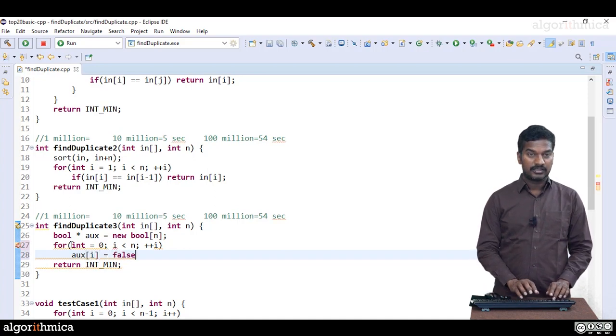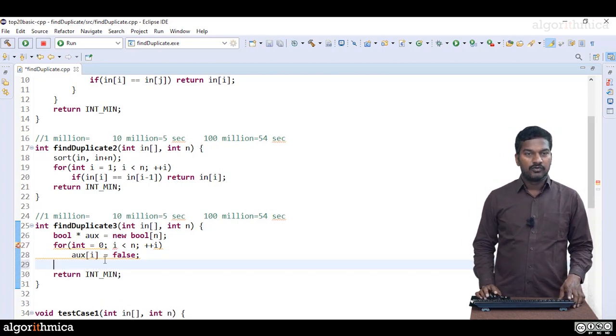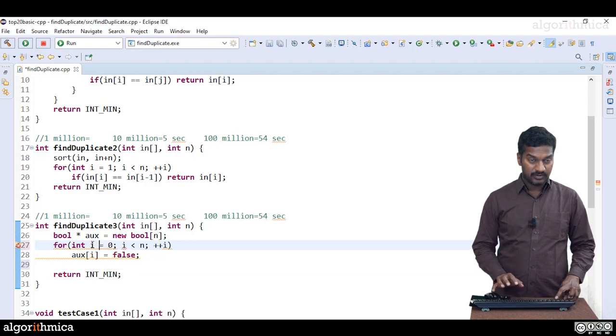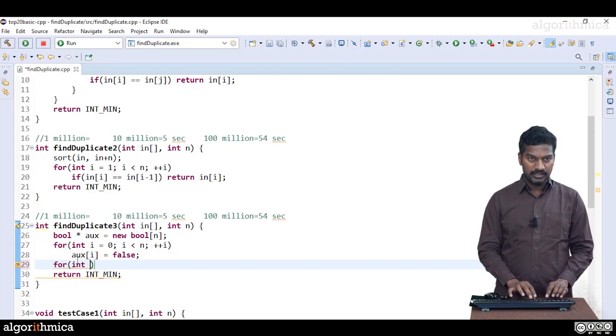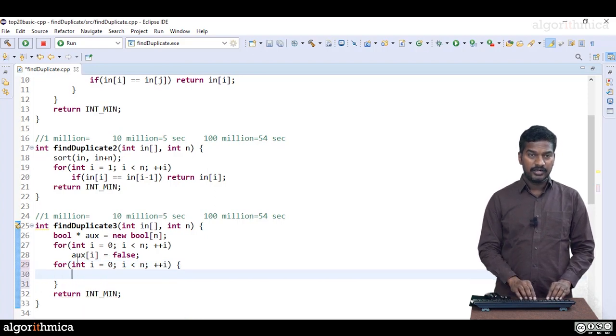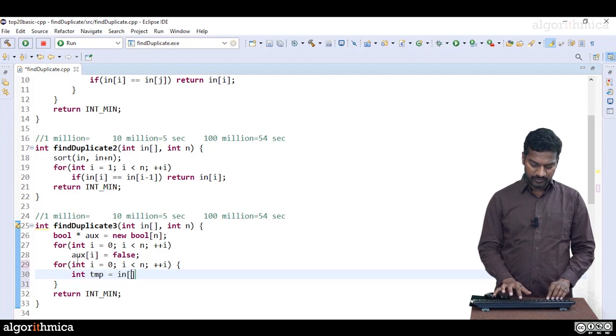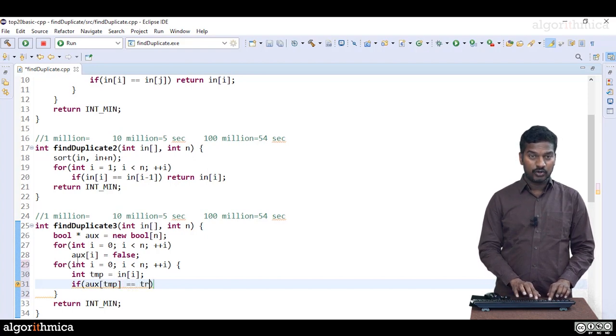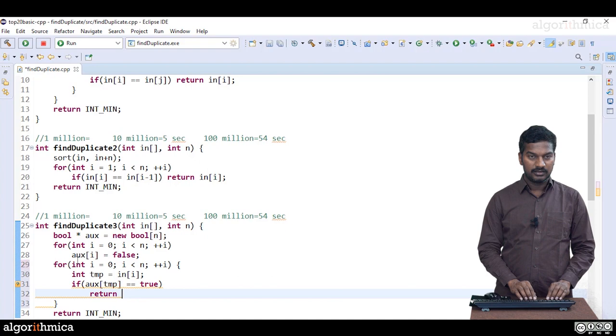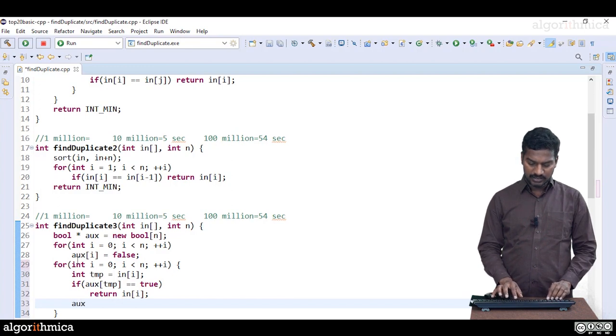Now what do we do? We got to do a lookup. Take each element: for integer i equals 0, i less than n, plus plus i. Take the element temp equals in[i]. That element you look up in the auxiliary array. If aux[temp] is already true, means we got the answer, return in[i]. Otherwise we are seeing it for first time, remember this: aux[temp] equals true.